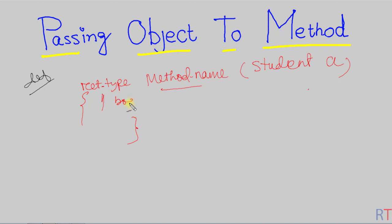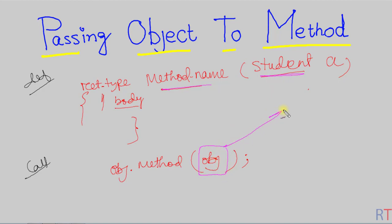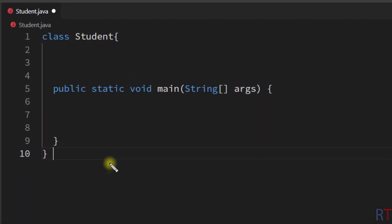Inside the curly braces we write the body of the method. Then while calling the method we have to use object dot the method name and then pass the object — so we are going to pass one student type object 'obj'. First we are defining one method which will receive one student type object, and then we are passing the student type object 'obj'.